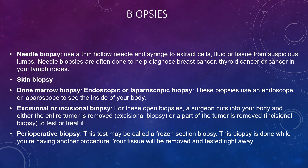Biopsies can also be undertaken. A needle biopsy uses a thin hollow needle and syringe to extract cells, fluid, or tissue from suspicious lumps. There are also skin biopsies, bone marrow biopsies, and endoscopic or laparoscopic biopsies to see the inside of the body. An excisional or incisional biopsy involves a surgeon cutting into the body — if the whole tumour is removed it is excisional; if only part is removed it is incisional. A perioperative biopsy, also known as a frozen section biopsy, is done while another procedure is underway to test tissue right away.